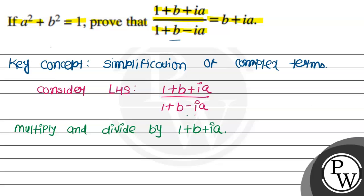So, here we get 1 plus b plus ia divided by 1 plus b minus ia into 1 plus b plus ia divided by 1 plus b plus ia, right?